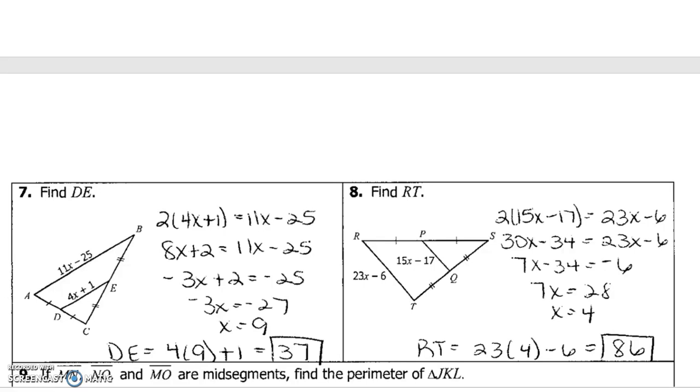How do you think you should set it up? Alright, let's look at M, N. M, N says the length is 49. That means the base it's parallel to is twice that length. So J, L is 98. So let's look at N, O. N, O is 42. That means the base J, K is twice that. So 42 twice is 84. So J, K is 84.